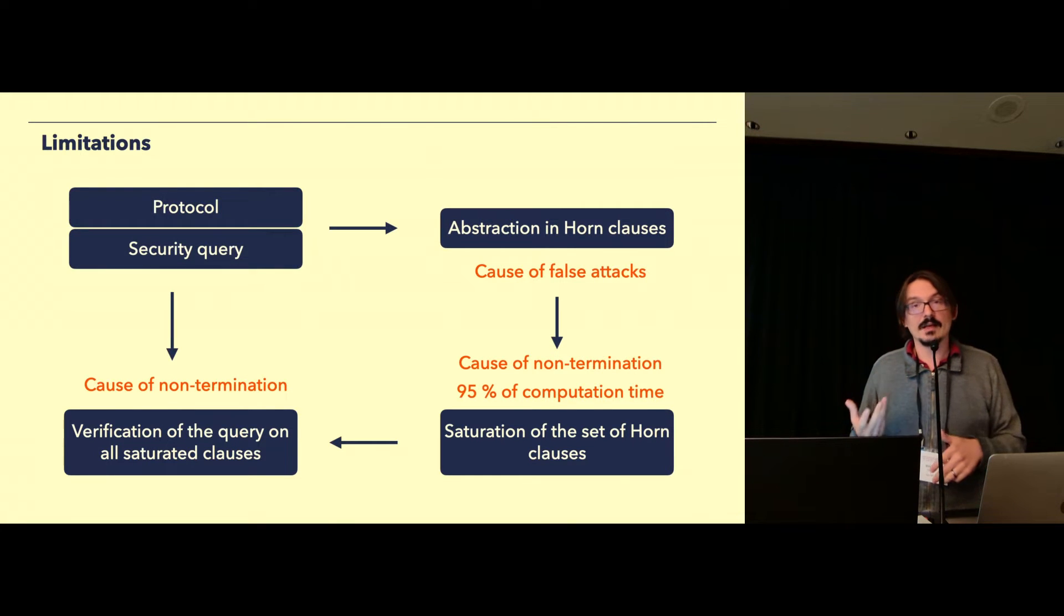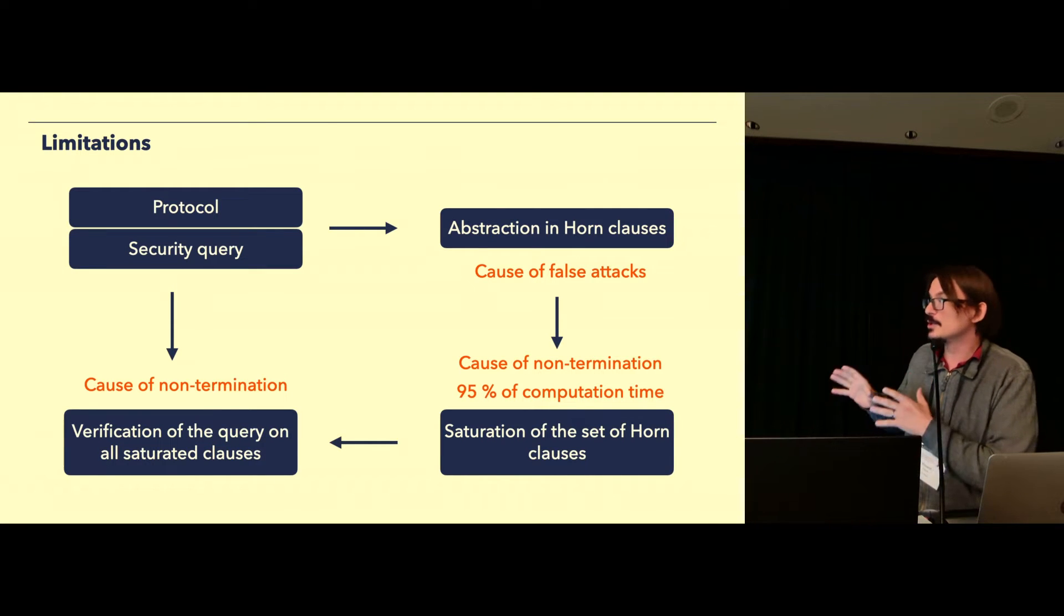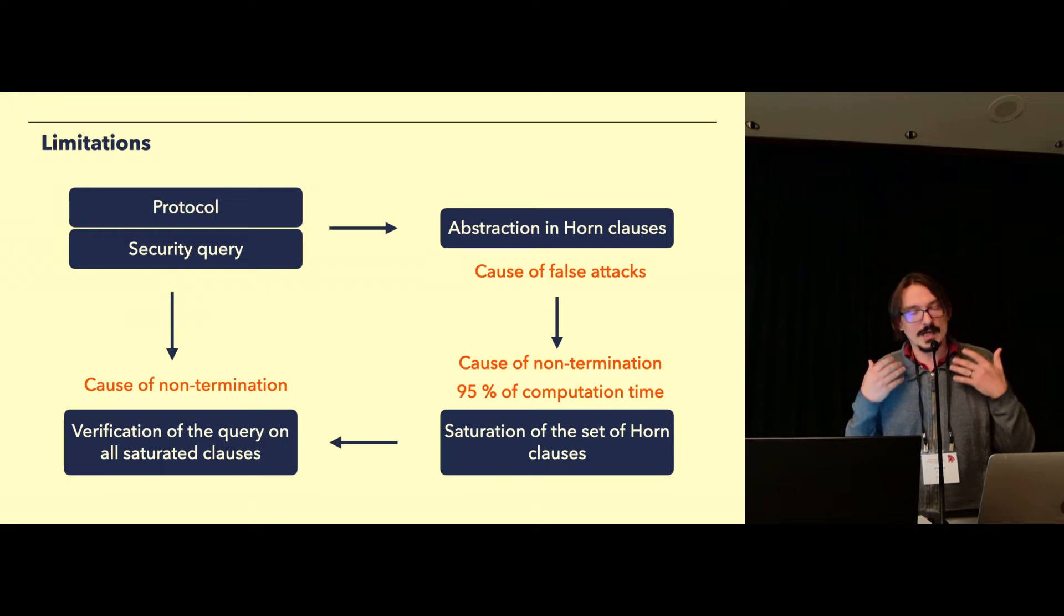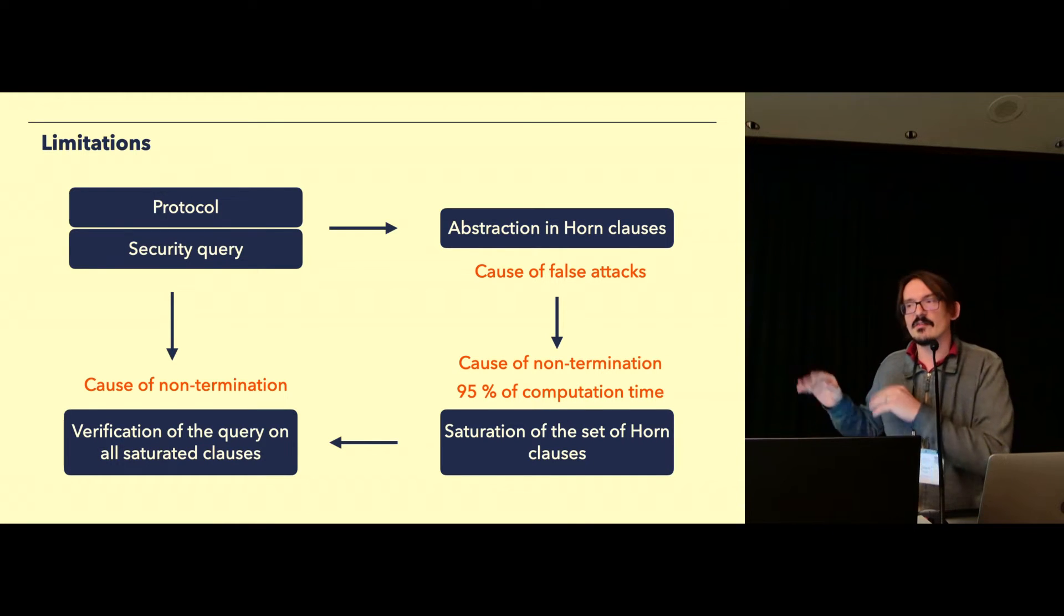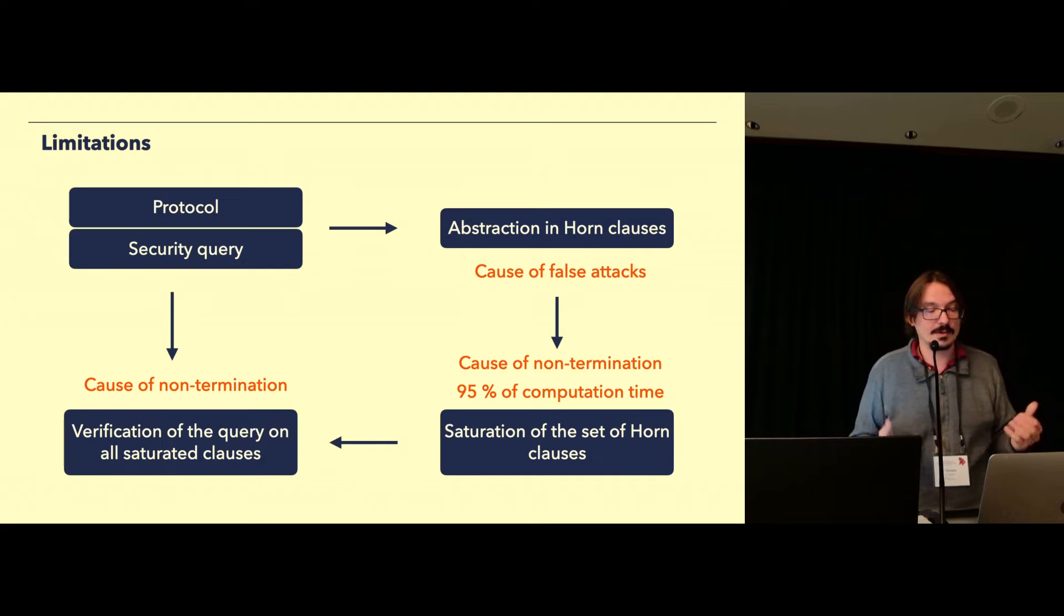So the limitations of ProVerif, in particular the false attacks and non-termination, comes mostly on the side of the false attacks from the translation from the protocol to the set of Horn clauses. This is where we lose some precision from the semantic of the Dolev-Yao model to what ProVerif is able to prove. And in terms of non-termination, most of it is due to the saturation of Horn clauses, which when it does terminate, still takes about 95% of the computation time of ProVerif. So I put 95%, this is average case, because of course it depends on your case study.